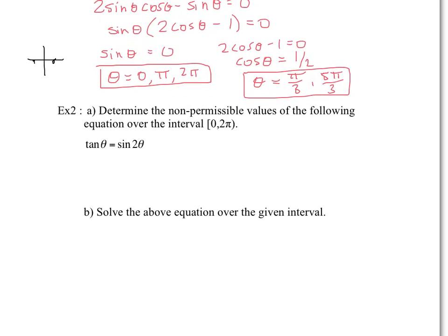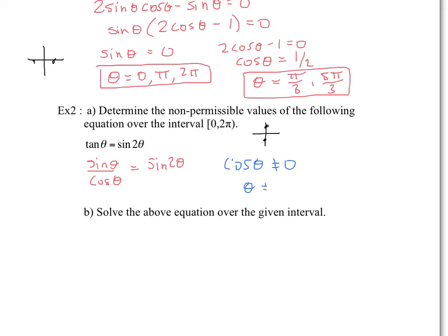Next one: determine the non-permissible values of the following equation. There's always non-permissible values you cannot include. On the left side we wouldn't have any non-permissible values, because you're never dividing by 0. But since tan is sine theta over cos theta, this has a non-permissible value. Therefore cos theta cannot equal 0. On that interval, cos equals 0 at π over 2 and 3π over 2. Therefore theta cannot equal π over 2 and 3π over 2. This means if these come up as possible solutions, we will have to remove them.